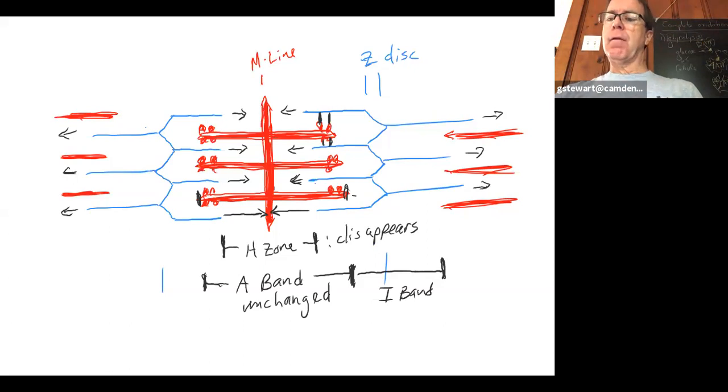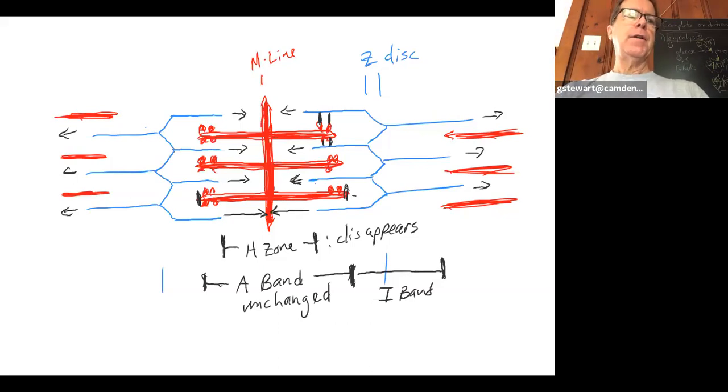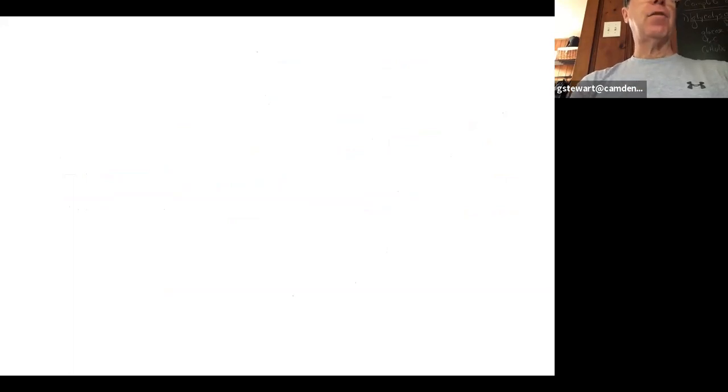I'm going to layer on a new board. The second thing I want to talk about is the generation of an action potential on the sarcolemma of a muscle cell. This is going to get a bit detailed — your book gets very detailed and the language might get confusing, so I'll try to simplify it.